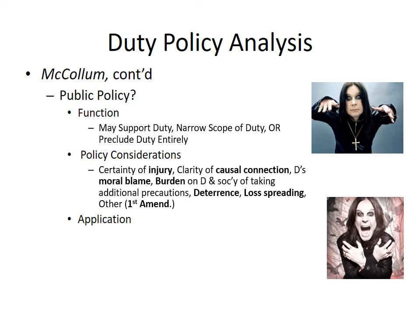California does a great job of listing the kinds of policy considerations used not just in this case but in all cases going through this three-step analysis. These factors are a good working list of policy concerns that courts use to determine whether to find a duty and what that duty might be. The first criterion is the certainty of injury—the court looks to see whether we're certain the victim truly sustained a legally cognizable injury. This usually comes up in cases involving emotional distress or pure economic loss like a lost business opportunity, which might be speculative. Here we have a very certain injury—the plaintiff's decedent is deceased—so the court doesn't have to worry about this as a limiting factor.